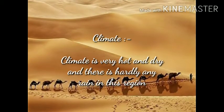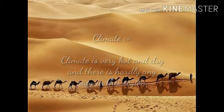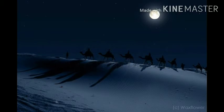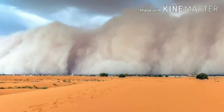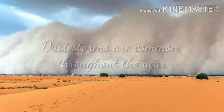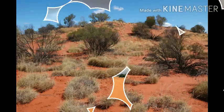The climate of Saudi Arabia: the Tropic of Cancer passes through the middle of Saudi Arabia, making its climate hot and dry, and there is very little rainfall in this region. The nights are very cool because the sand and desert cools down quickly at night. During windy days, nights are very cold. Dusty storms are common throughout the year. The range of temperature is very high in the desert region.